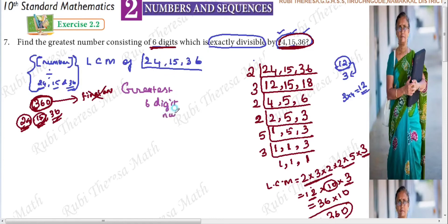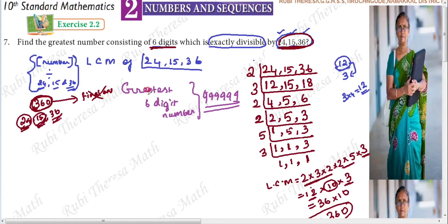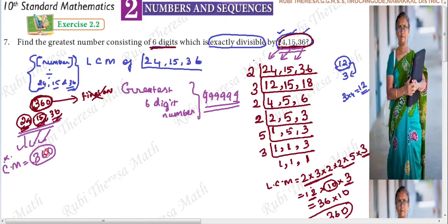The greatest 6-digit number is 999999. So we take 999999 — this number must be exactly divisible by 24, 15, and 36. We have already found the LCM — the common multiple for all these numbers is 360. That is the least common multiple. So we divide 999999 by 360.